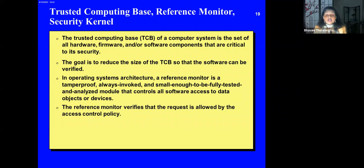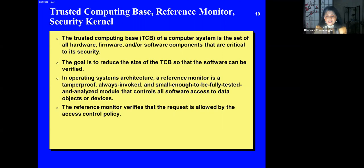The Trusted Computing Base is the set of all hardware, firmware, and software that are critical for security. The goal is to reduce the size of the TCB. In operating systems architecture, the TCB is really critical — it's like the heart. The TCB of the operating system has to be small and fully tested and verified. That's the reference monitor or security kernel. The reference monitor verifies that requests are allowed by the access control policies.